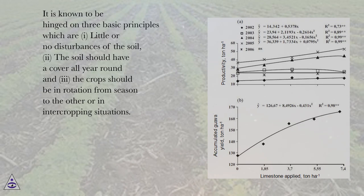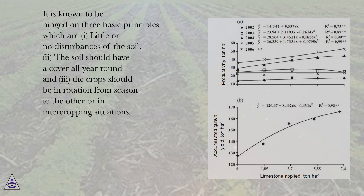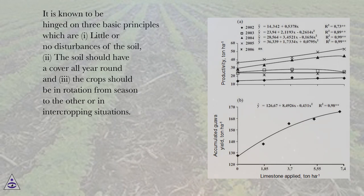CA is known to be hinged on three basic principles: first, little or no disturbance of the soil; second, the soil should have a cover all year round; and third, the crop should be in rotation from season to the other or in intercropping situations.